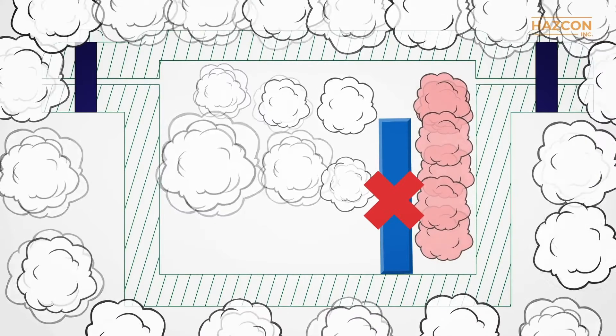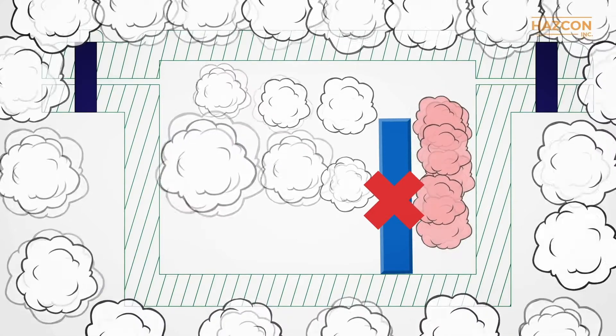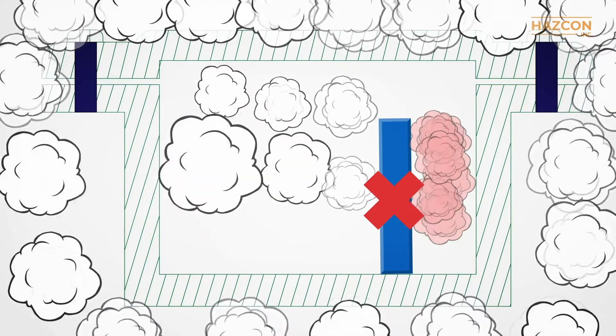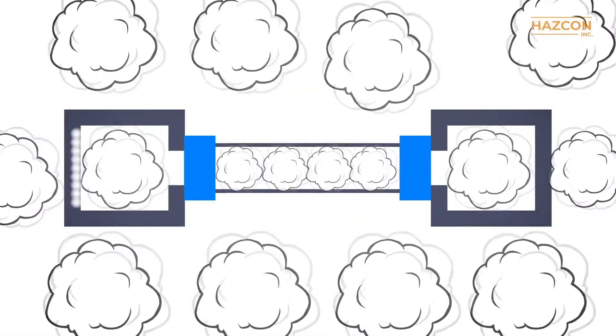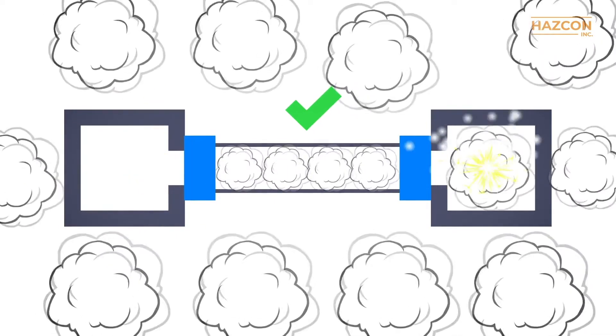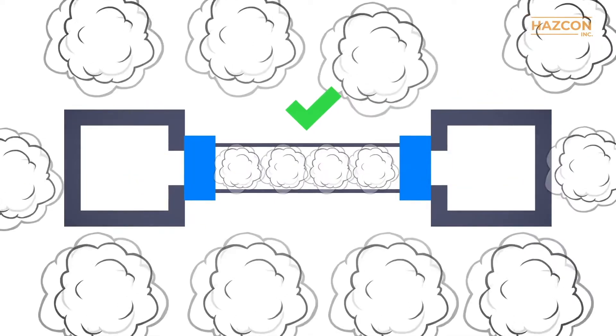Prevent unburned gas from collecting within an enclosure. This should be considered in the design of the enclosure. Use stopping plugs or sealing material to seal off one enclosure from another and to seal off the conduit system.